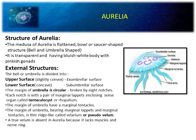The margin of the umbrella is circular, broken into eight notches. Each notch has a specific sense organ — that is a tentaculocyst or rhopalium — a very unique sense organ found in Aurelia. The margin of the umbrella also has specific marginal tentacles. The margin of the umbrella bears marginal lappets as well, forming a velarium-like structure.